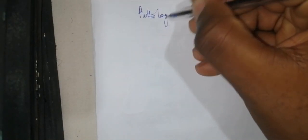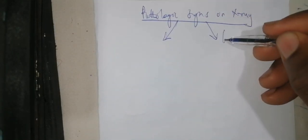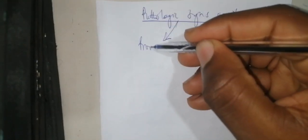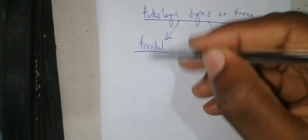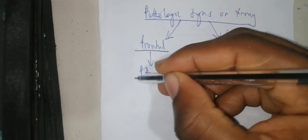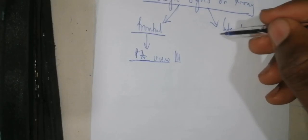You are going to visualize the pathologic signs on the X-ray. You need to know that there are different pathologic signs — some are on the lateral view of the X-ray and some are on the frontal view. The conventional frontal view used in X-ray is a posterior-anterior view.